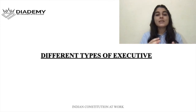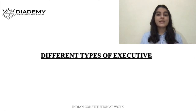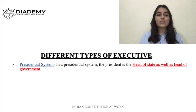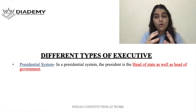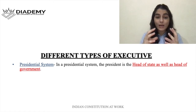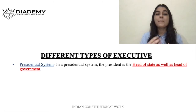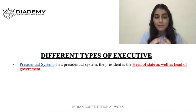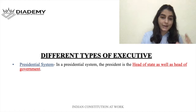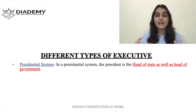Next are the different types of executive. There are two main types: the presidential system and the parliamentary system. In the presidential system, as the name suggests, the most important person is the president. In this system the president is very, very powerful — so powerful that he is the head of the state as well as the head of the government.